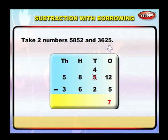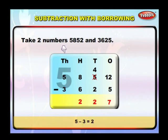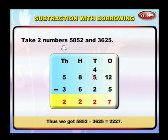Subtract the tens. From 5 we have borrowed 1, which reduces its value to 4. So 4 minus 2 is equal to 2. Write 2 below the tens column. Subtract the hundreds: 8 minus 6 is equal to 2. Write 2 below the hundreds column. Subtract the thousands: 5 minus 3 is equal to 2. Write 2 below the thousands column. Thus, 5852 minus 3625 is equal to 2227.